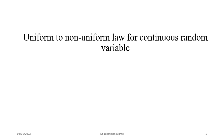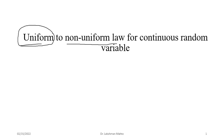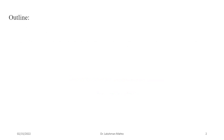We will discuss continuous random variables and their distributions. To compute probability, we need a probability law. In the previous lecture, we saw the simplest continuous random variable — the uniform random variable — based on the equally likely principle. Today we will discuss how to go from a uniform to a non-uniform law for continuous random variables, which is more practical since things are generally non-uniform in nature.